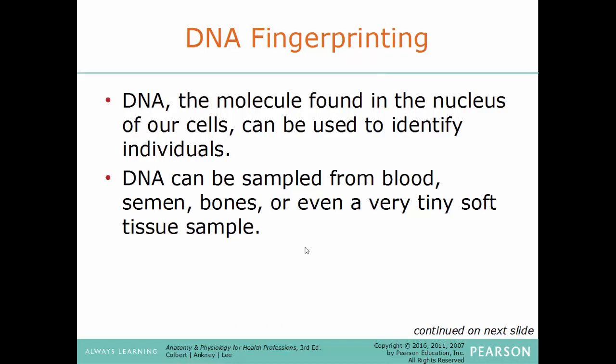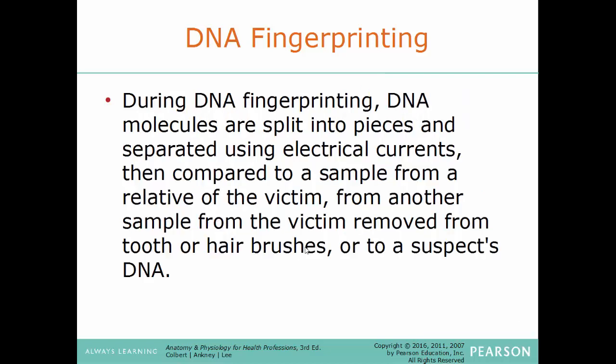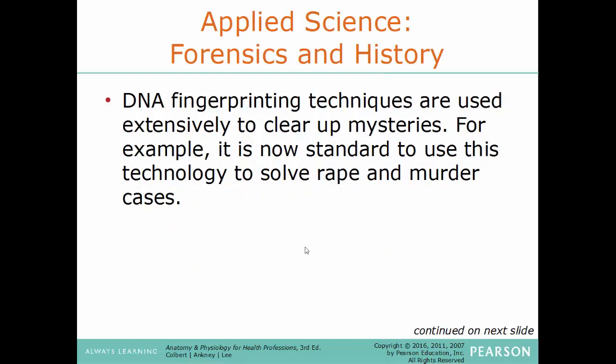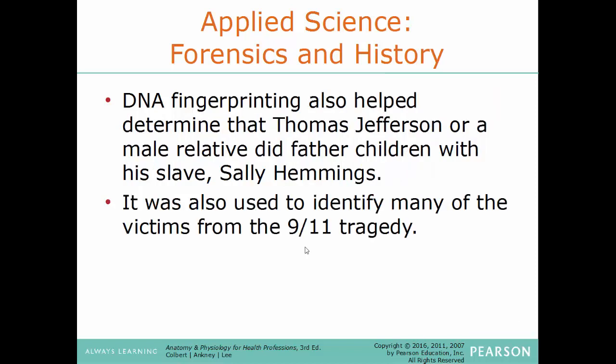DNA fingerprinting: DNA, the molecule found in the nucleus of every cell, can be used to identify individuals. DNA can be sampled from blood, semen, bones, or even a tiny soft tissue sample. During DNA fingerprinting, DNA molecules are split into pieces and separated using electrical currents, then compared to a sample from a relative of the victim, from items like hair brushes, or to a suspect's DNA. DNA fingerprinting techniques are used extensively — for example, to solve rape and murder cases, to determine that Thomas Jefferson or a male relative fathered children with his slave Sally Hemings, and to identify many victims from the 9/11 tragedy.